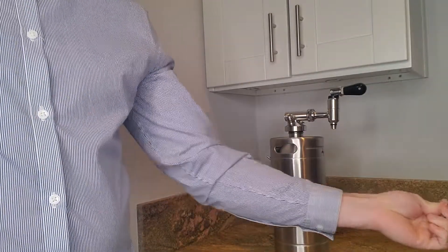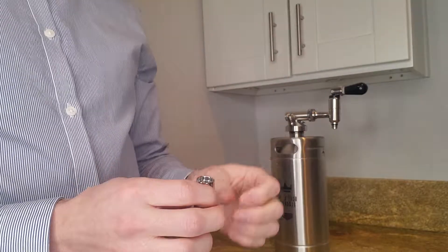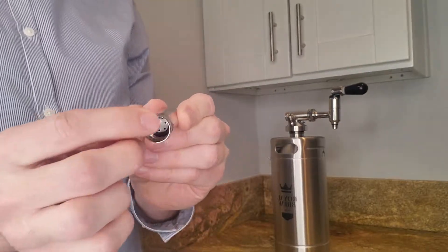So you would want to rinse it under the faucet and clean it out, maybe with a little brush. The little brush that's included with the kit is a really good option.